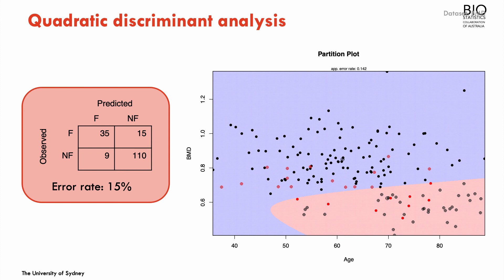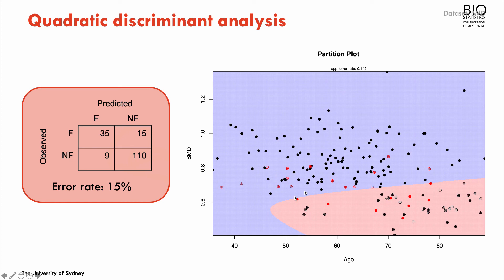Quadratic discriminant analysis is very similar to LDA, but in terms of classification regions, the boundary is no longer linear — QDA allows for curved, quadratic borders. This is shown here with two covariates; it is harder to represent geometrically with more than two. The key idea is that quadratic discriminant analysis allows more flexible classification borders. In this case the error rate is still the same as for linear discriminant analysis, because there are no observations in the additional region that would benefit from the different border.